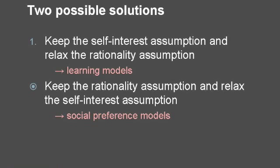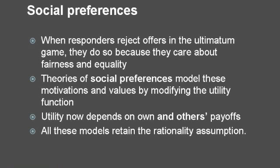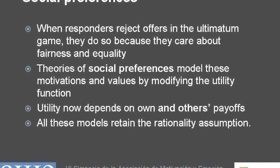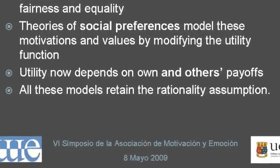Social preference models retain the rationality assumption and relax the self-interest assumption. In other words, they retain the basic assumptions of rational choice theory — namely that people make decisions in a way that tends to maximize their utility. What these models add is the idea that utility is now a function not only of my own personal gain, but also of how much other people gain. In other words, these models propose that people care about things like fairness and equality, in addition to their own personal gains and losses.